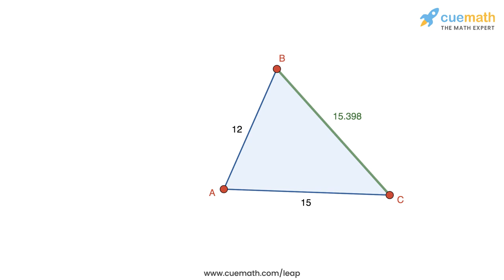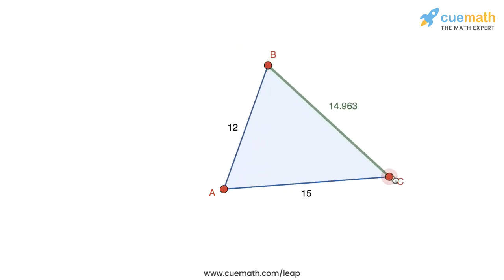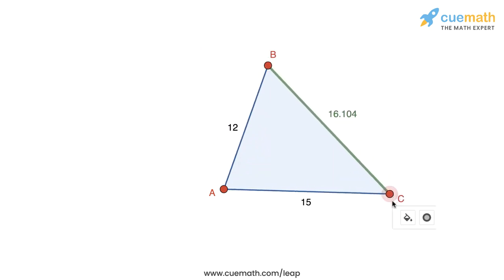Right now BC has a length of 15.398 centimeters, but if I move the vertices of the triangle around, for example like this, or if I move C around like this, we can see that the length of BC changes.